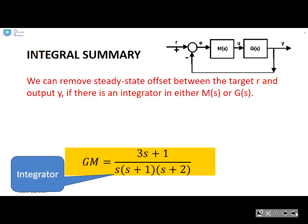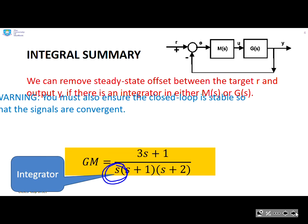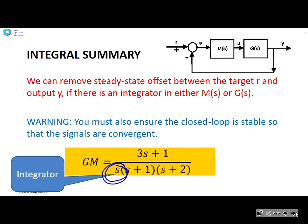So we can remove the steady offset between the target and the output if there's an integrator in either M of S or G of S. And there's a reminder, there's the integrator in this GM term. But there's a warning. You also need to ensure that the closed loop is stable so that the signals are convergent. So remember, this result has come from the final value theorem, and the final value theorem only applies when signals are convergent.